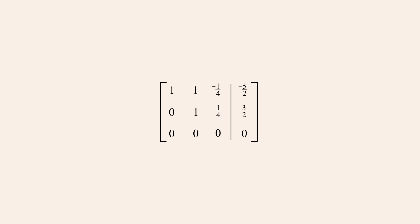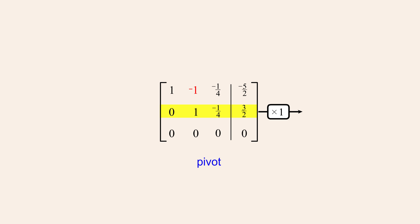However, to be in reduced row echelon form each leading entry must be the only non-zero entry in its column. Although the leading entry for row one is the only non-zero entry in its column, the leading entry of row two is not. Therefore, we must change the entry above row two's leading entry to a zero. This can be accomplished using another pivot operation adding one times row two to row one.